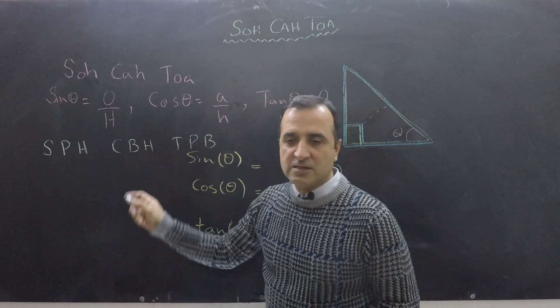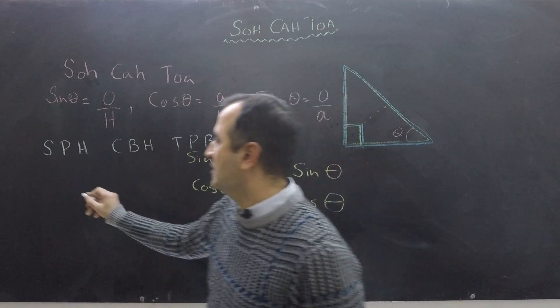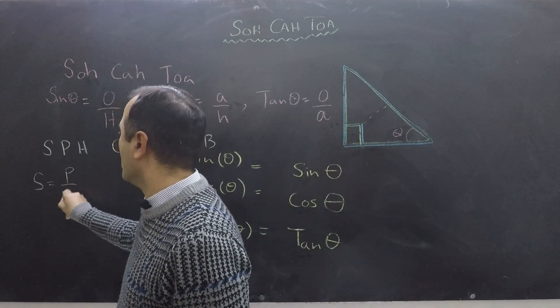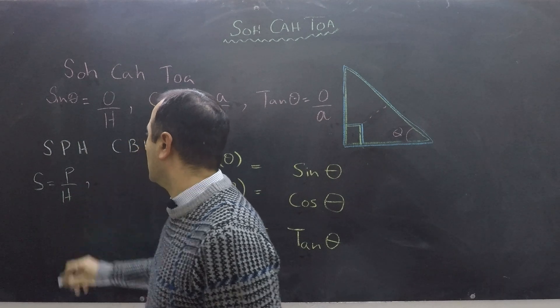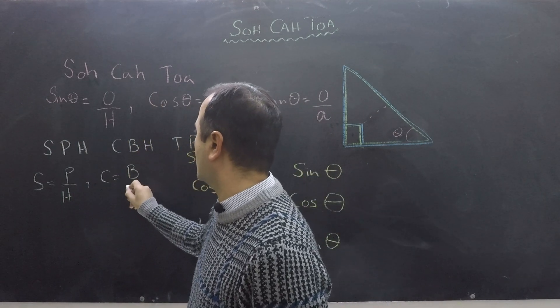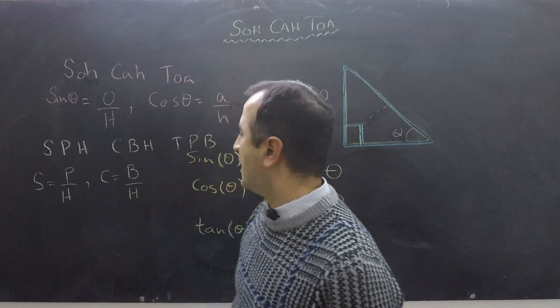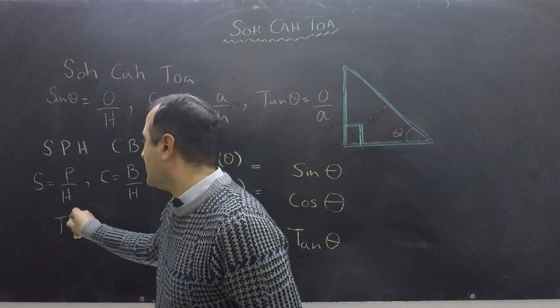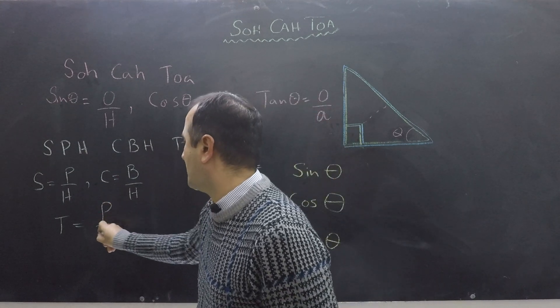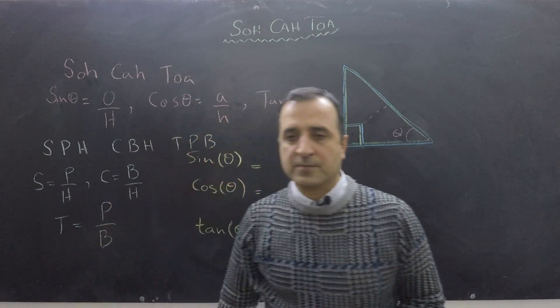And according to this mnemonic we have sine equals perpendicular upon hypotenuse, and cos equals base upon hypotenuse, and finally tan equals perpendicular over base. Make sense?